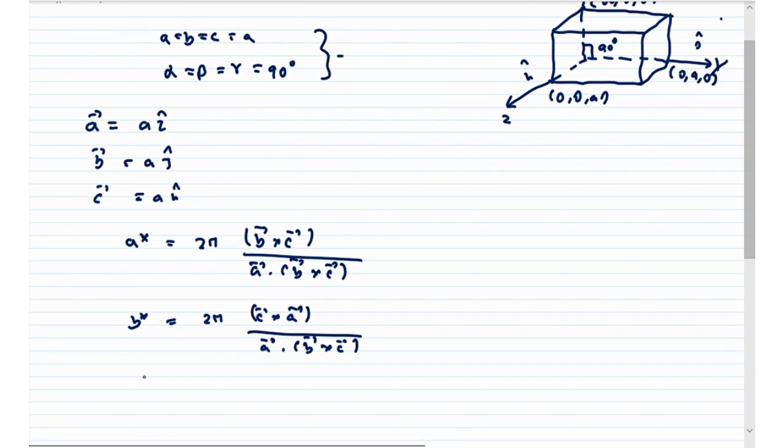Similarly, c star is given by 2π into a cross b, by a dot b cross c. Now in this case we have b cross c. What is b? B equal to a j-cap, and what is c? C is equal to a k-cap. So j-cap cross k-cap is i-cap, so we have a squared i-cap.